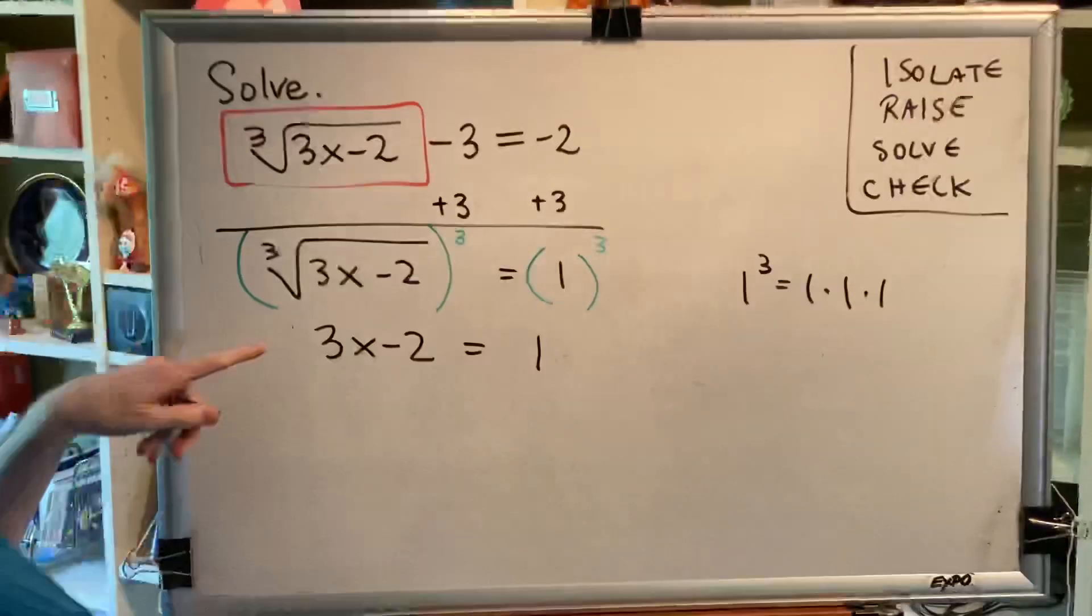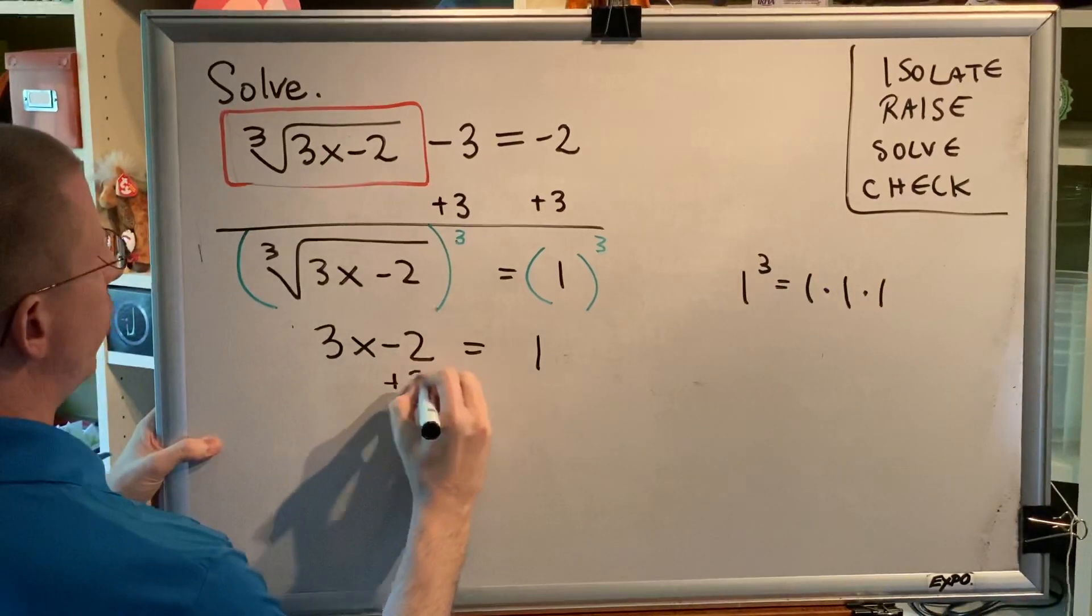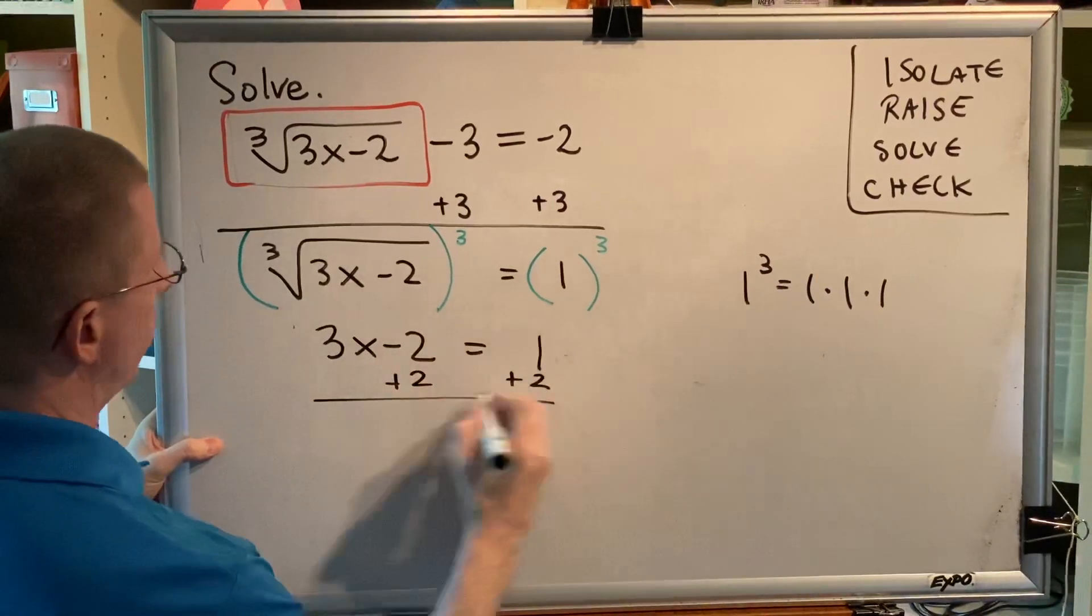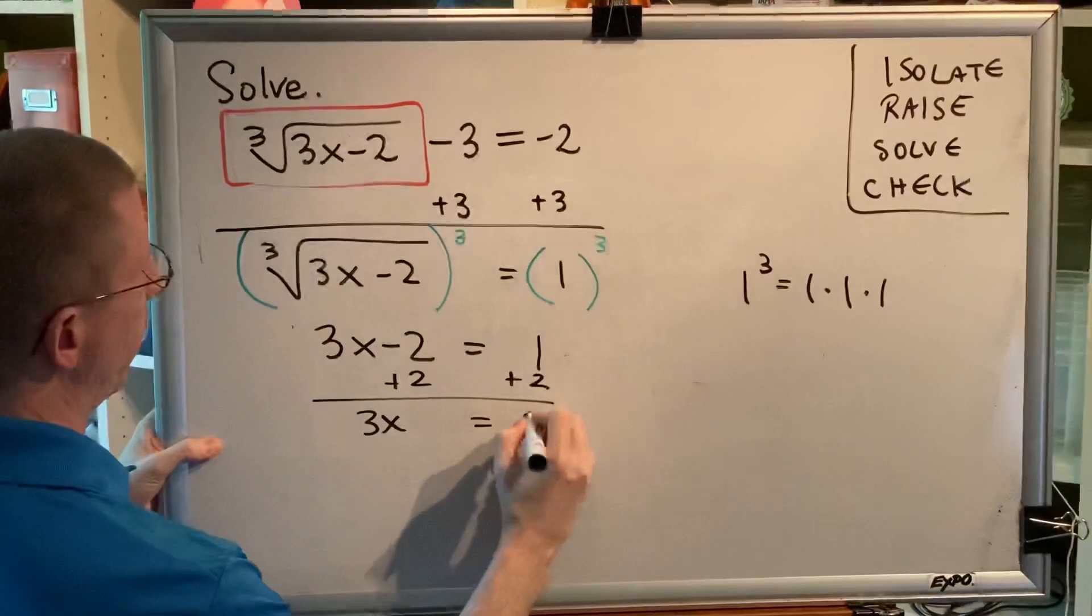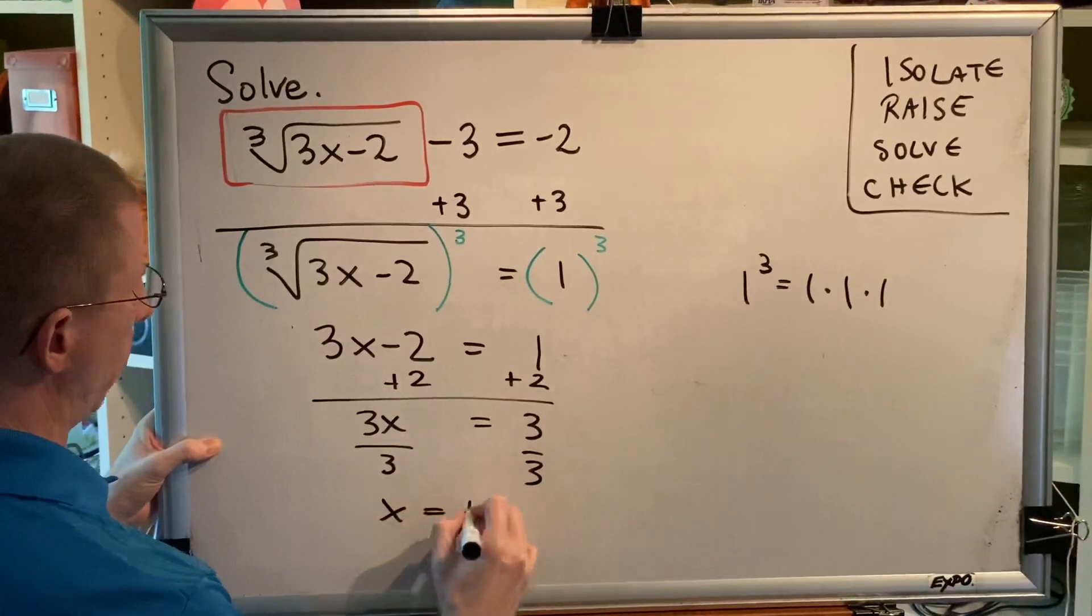Now, solve. As long as there are no radicals in your equation, you can solve the equation. So, we're going to add 2 to both sides, which gives us 3x equals 3, and we'll divide by 3 on both sides, which gives us x equals 1.